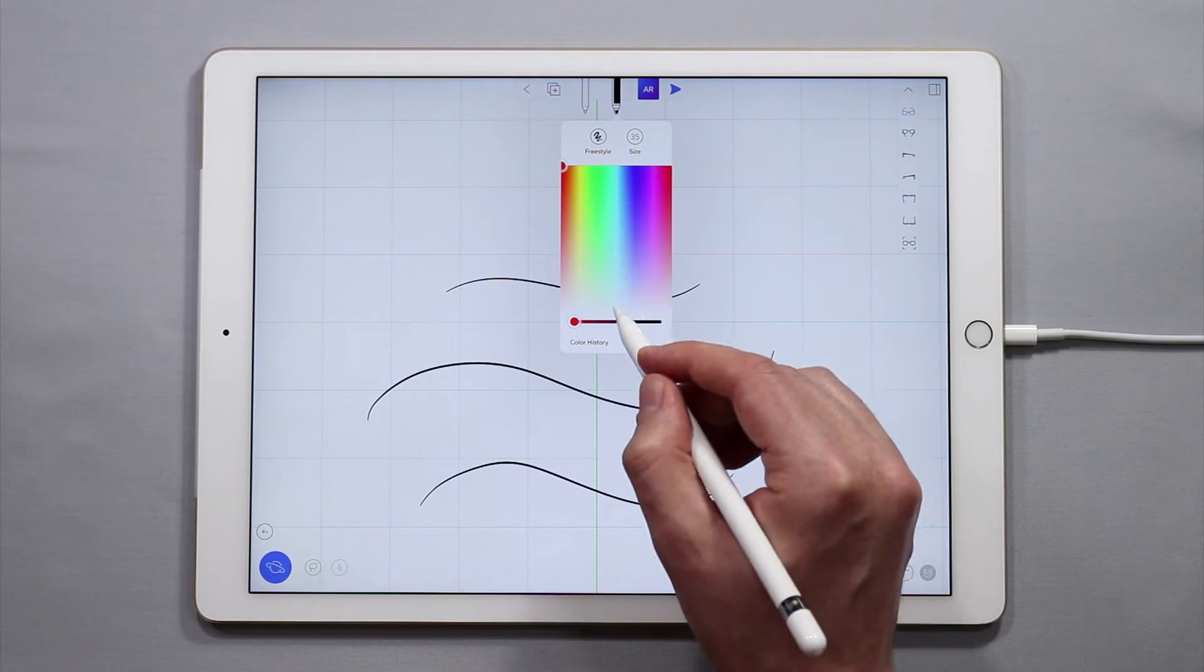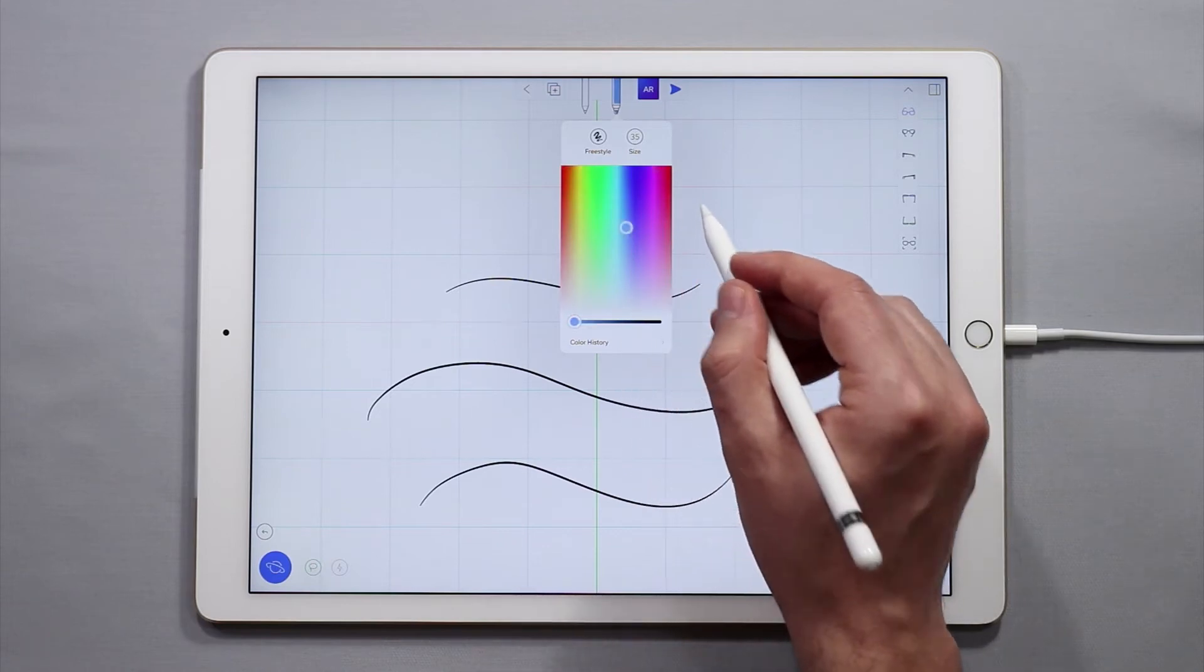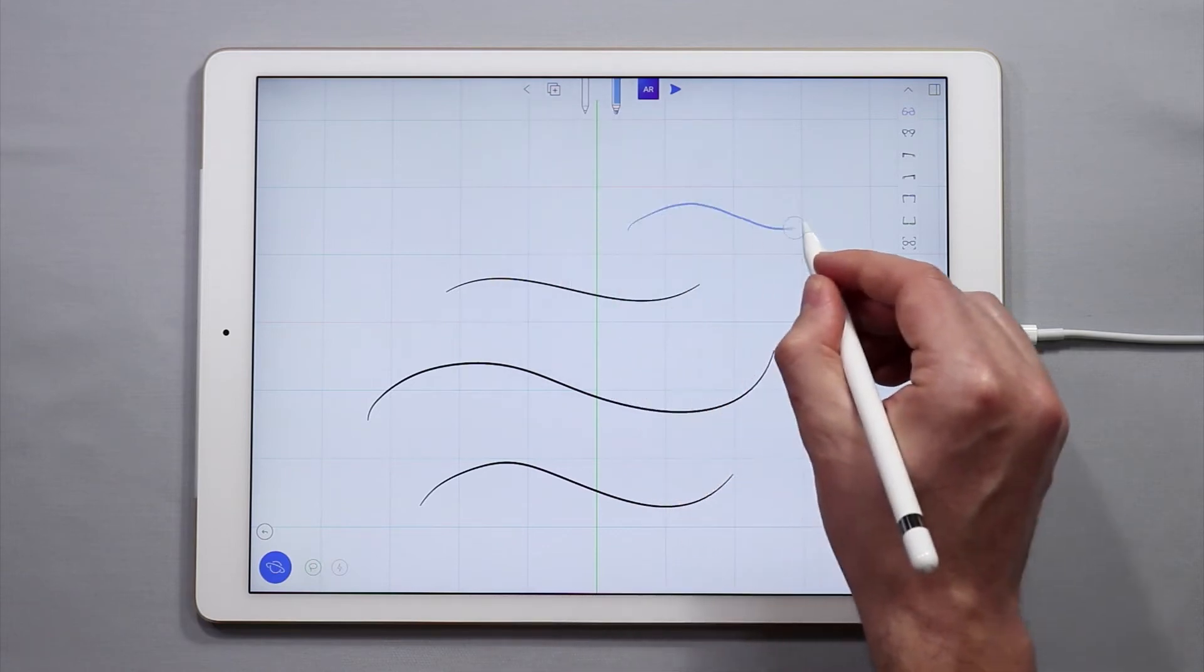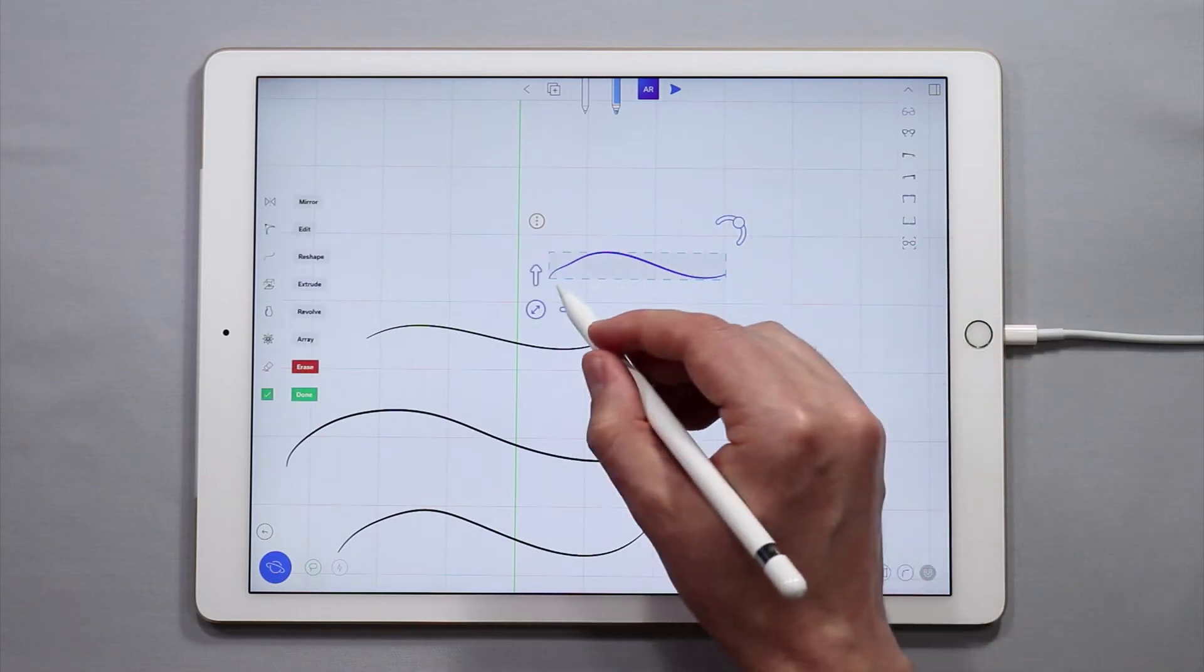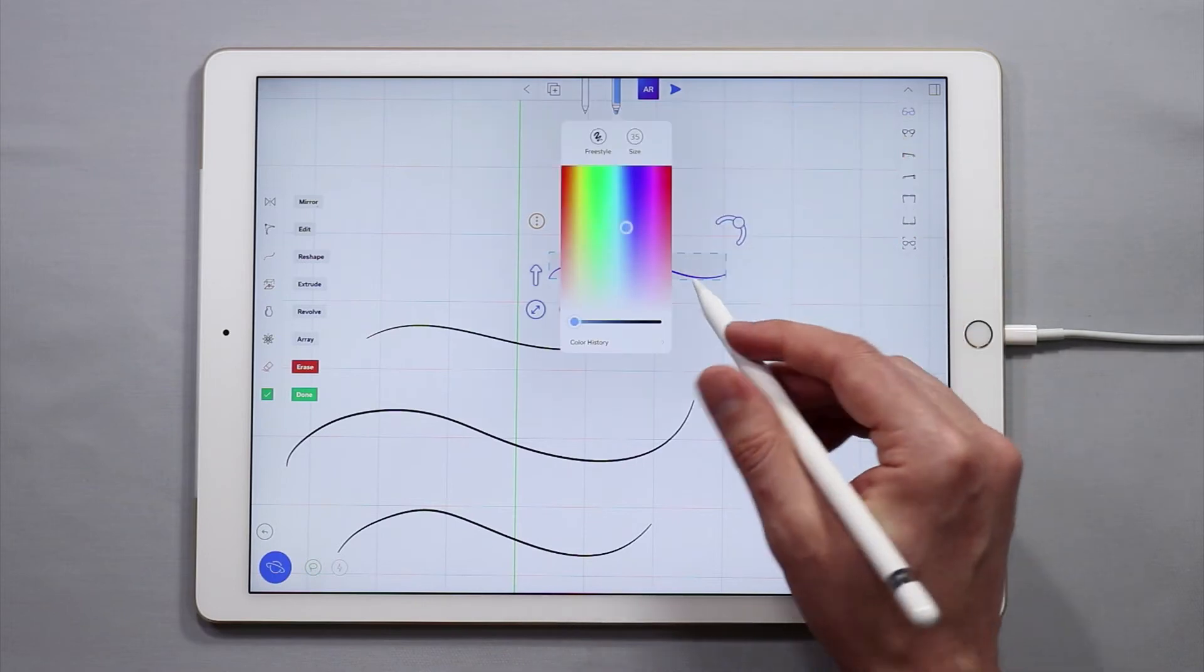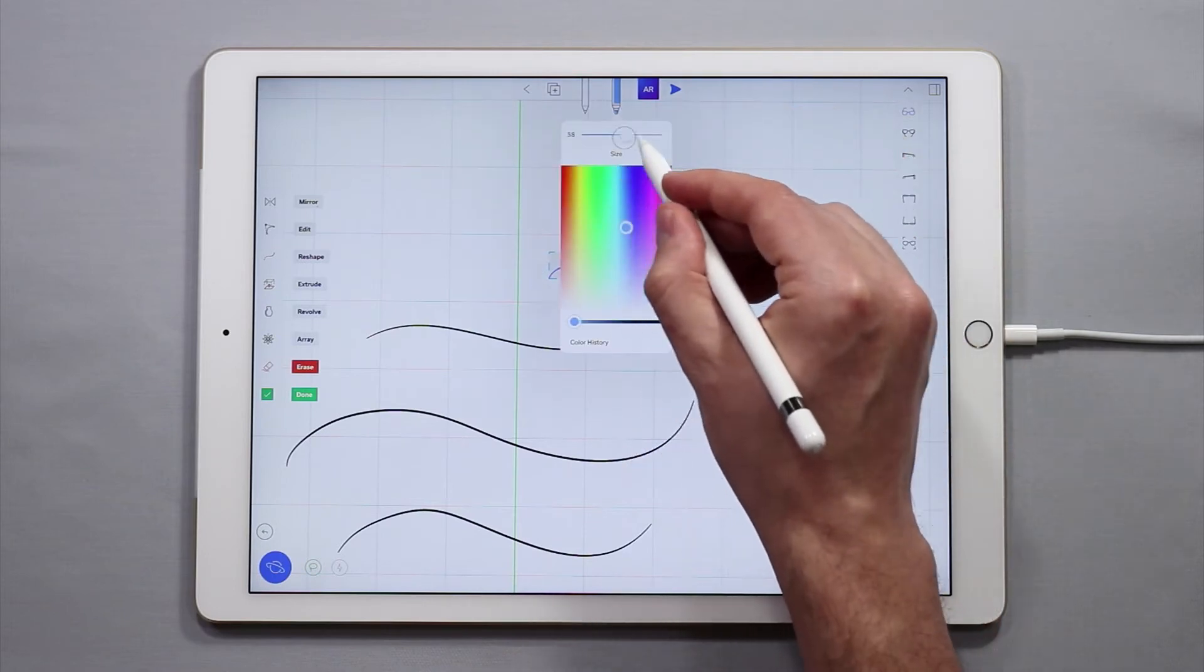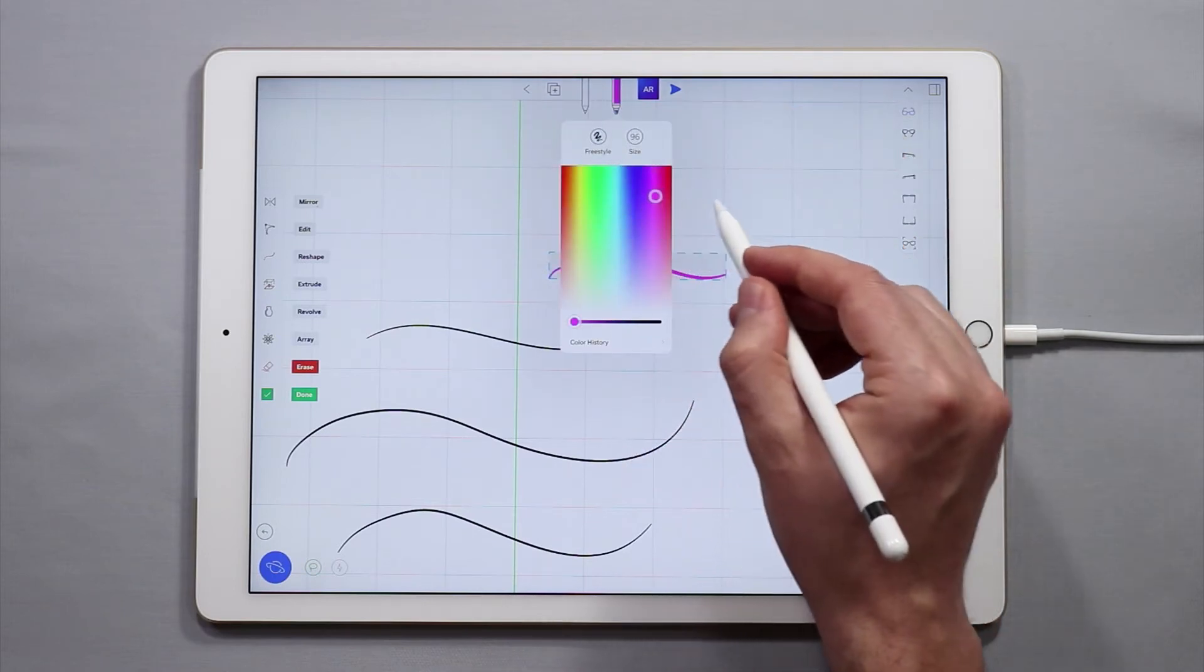From there you can make a nice blue curve and you can also if you select a curve by double tapping on it you can retroactively change the size or even the color.